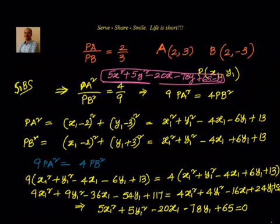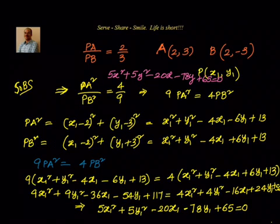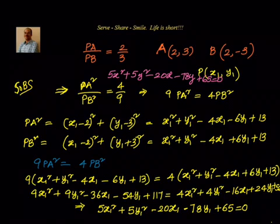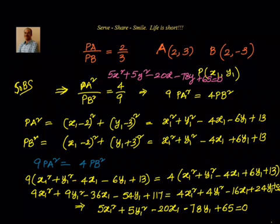That is the locus of point P, which moves in such a way that the distance from P to A and B are in the ratio PA by PB = 2 by 3. Again, you can see that it is a circle. How do we know it is a circle? It is a circle because the coefficients of x squared and y squared are the same. So the locus of point P is a circle.